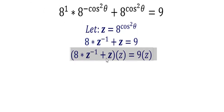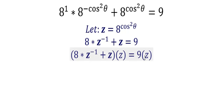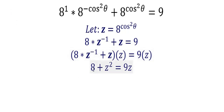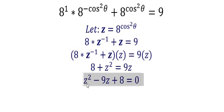Now let's multiply both sides by z: 8·z⁻¹ plus z, all times z, equals 9z. Then 8 times z⁻¹ times z is just 8, and z times z is z squared, giving us z squared plus 8 equals 9z. Rearranging, this is z squared minus 9z plus 8 equals 0.